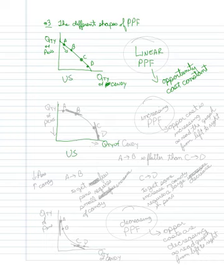Alternatively, we could have the same two products, quantity of candy, quantity of pens, and it's bowed outwards. This is still a PPF. This is basically called an increasing PPF, and this is actually the kind of production possibilities frontier that you will most commonly encounter.